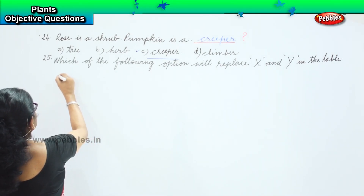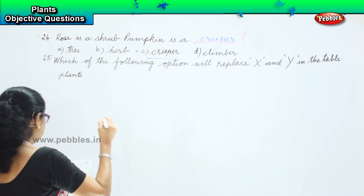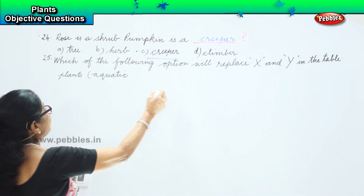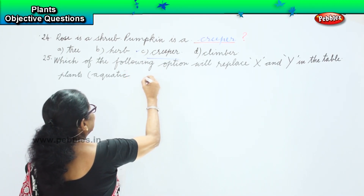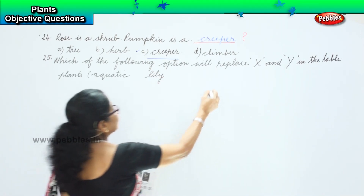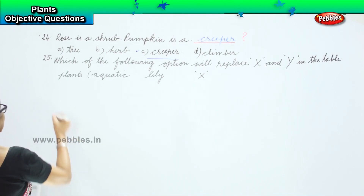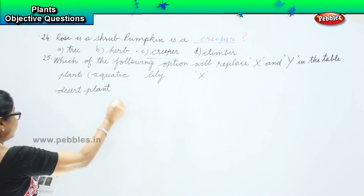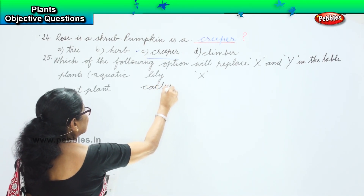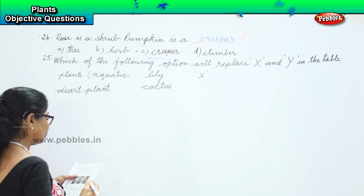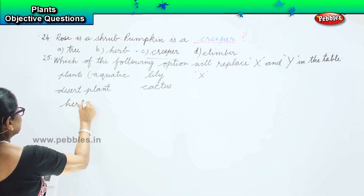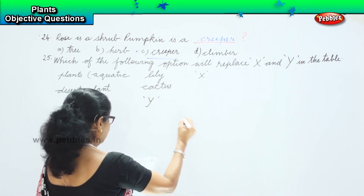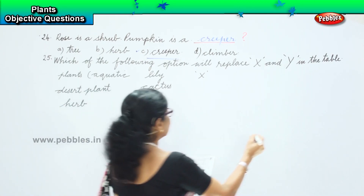We have plants: aquatic — lily, then X; desert plant — cactus; and herbs — coriander, and so on.